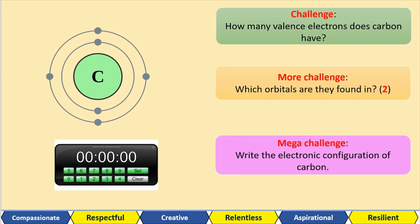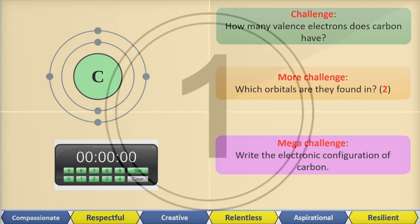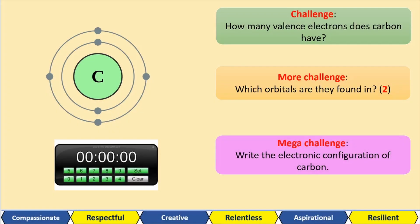Have a go at these challenge questions. How many valence electrons does carbon have? It has four outer shell electrons — four valence electrons. The more challenging question: which orbitals are they found in? This is two marks because you've got two electrons that occupy the 2s orbital and two electrons that occupy the 2p orbital. For the mega challenge, write down the electronic configuration for carbon: 1s², 2s², 2p². If you have issues with this, don't worry — I'm going to do a video going over electronic configuration again.